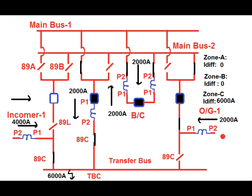For zone C during the fault: current through the incomer CT flows P2 to P1, which is the forward direction for zone C. The TBC CT current also contributes in the forward direction for zone C. The total zone C differential current is 6000 ampere. This triggers a trip signal based on the 89C status, causing the TBC breaker to trip and isolate the fault.